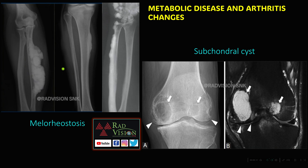Metabolic diseases and arthritis can also mimic tumors. In melorheostosis, dense sclerosis showing a candle wax appearance along the long bones can mimic osteoid-forming tumors such as osteosarcoma, but the typical dermatomal distribution helps differentiate melorheostosis from bone tumors. Subchondral cysts showing subchondral lucency and hyperintense cysts can mimic GCT, but medial joint space narrowing, subchondral edema, and osteophyte formation favor subchondral cysts or geodes rather than GCT, ABC, or tumors.